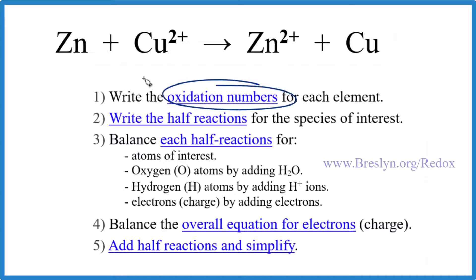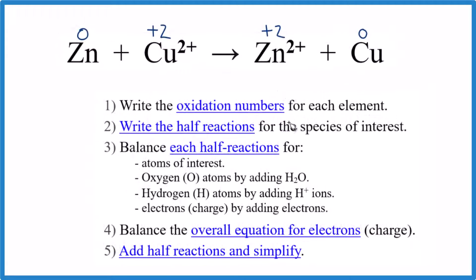First thing we do, we write the oxidation numbers. In this case, the oxidation numbers are the same as the ionic charge. Not always the case, but that works out here.